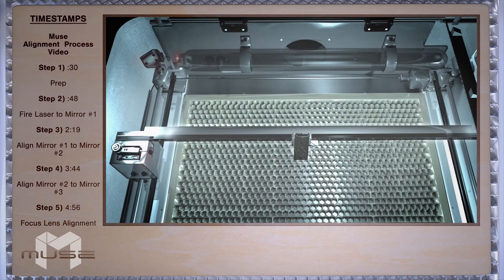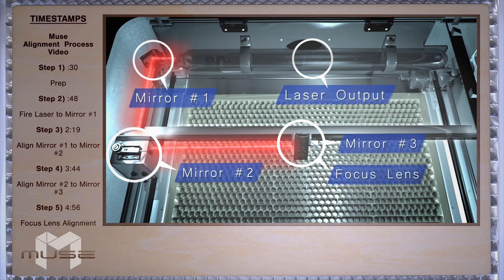Before we start the alignment process let's visualize what we're trying to do. We want to take the actual laser which is invisible and align it to the red beam to ensure that both hit each mirror precisely.